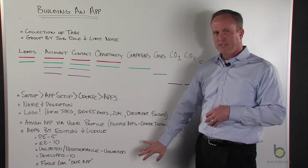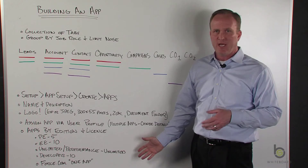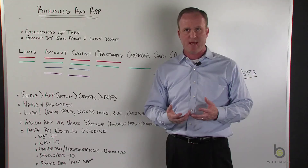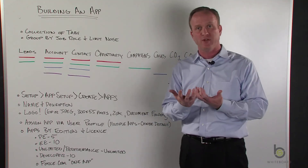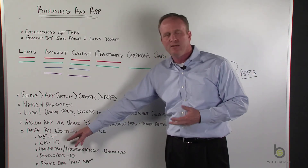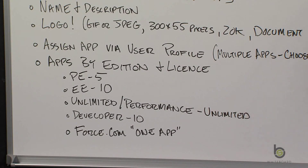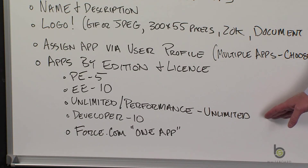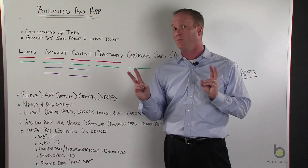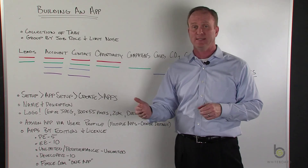The limitations are really by edition and license type. In Professional Edition, you can have up to five custom apps — five groupings of tabs for your users. Enterprise Edition allows up to 10. Unlimited or Performance Edition gives you as many as you want. Developer Edition allows 10. And if you have something like a Force.com One app license, not surprisingly, you get just one app for users with that license type.